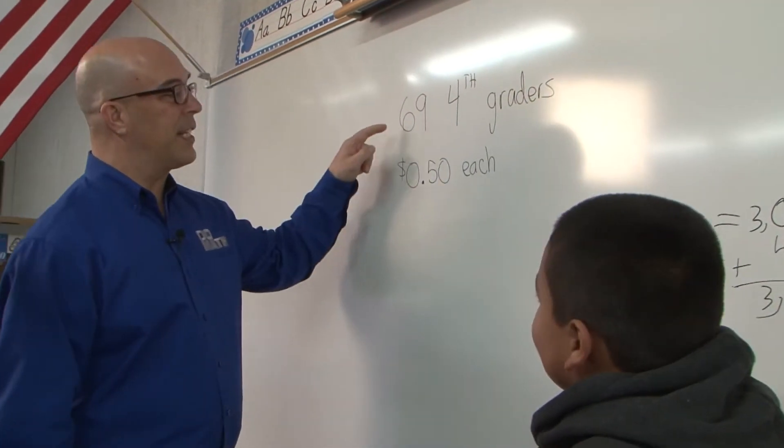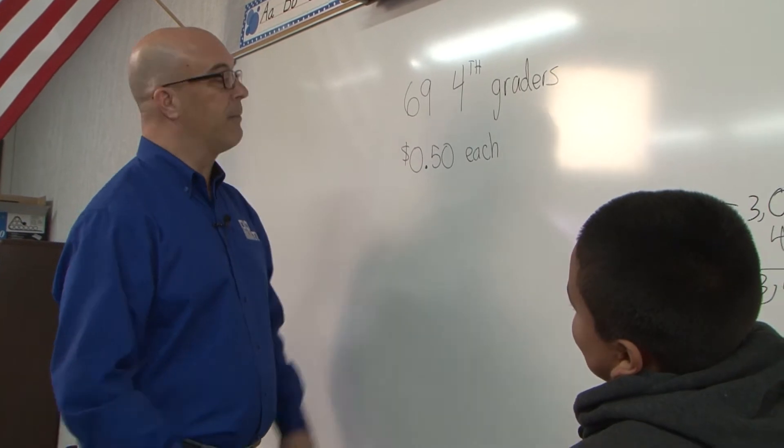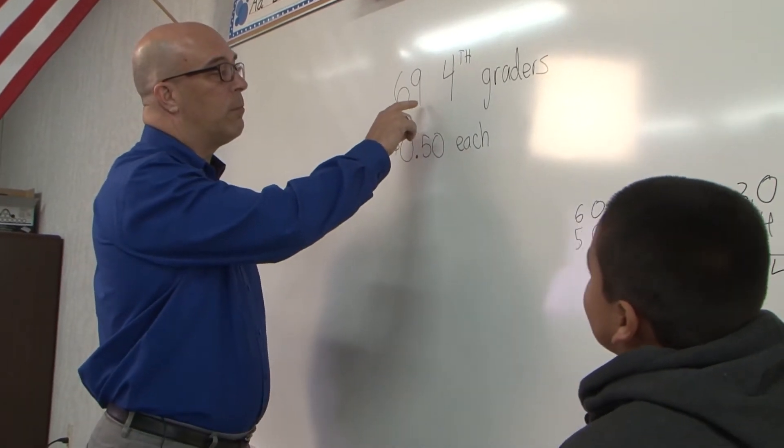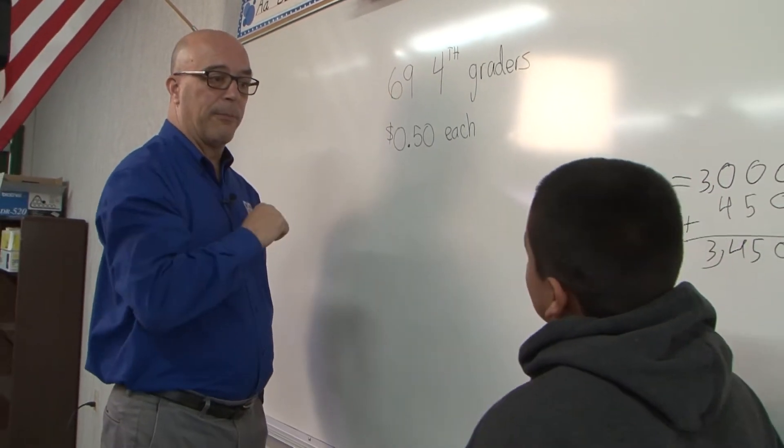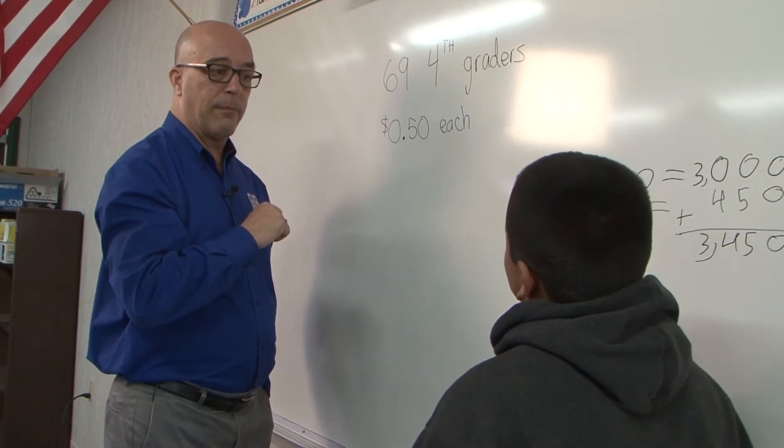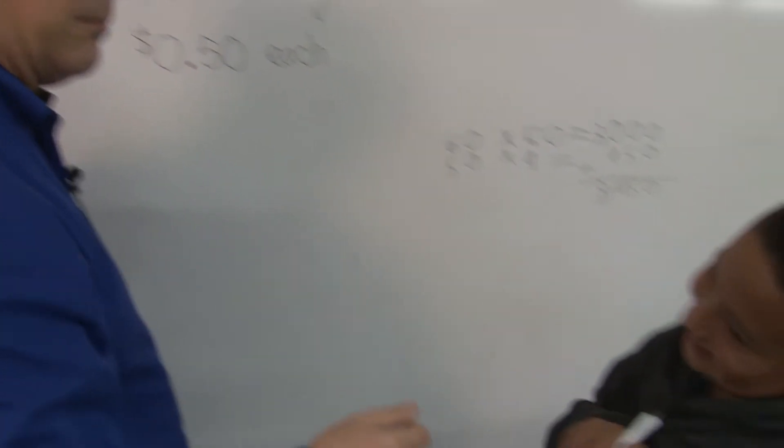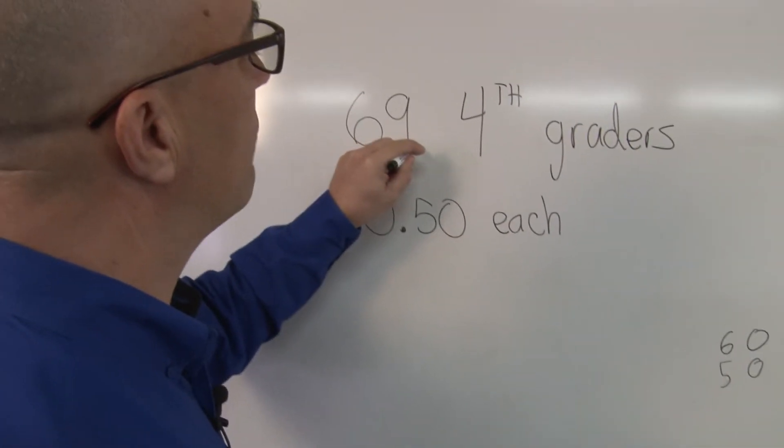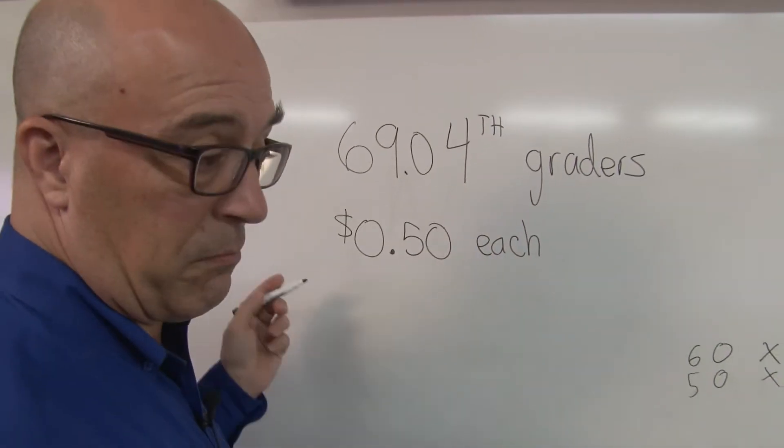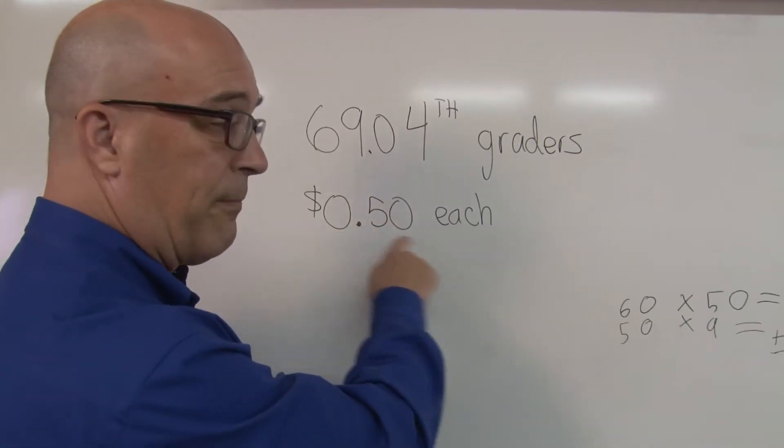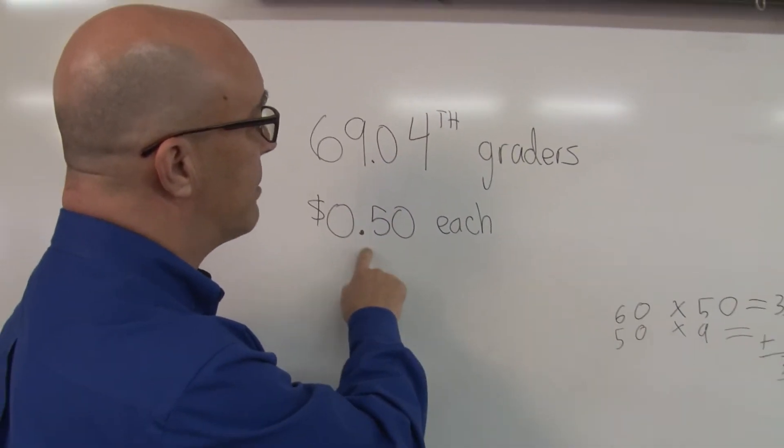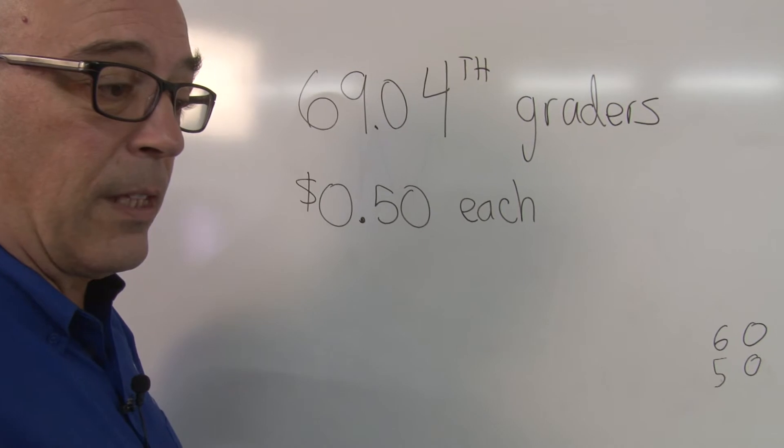All right, here's what we're going to do. You were multiplying 69 times 50 cents, right? Okay. Is there a decimal up here in this number? Do you see a decimal point anywhere up here? No. No, there isn't one, right? And if there was one, it would be right here and it would just be zero. Is there a decimal point here? Yeah. Right there. And how many numbers are after the decimal point? Two.